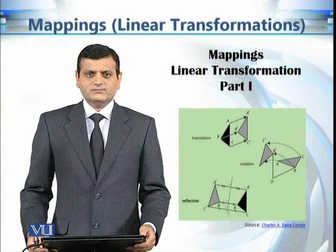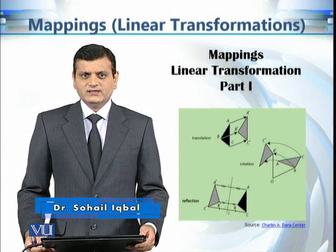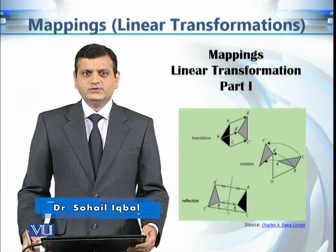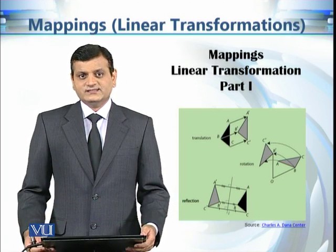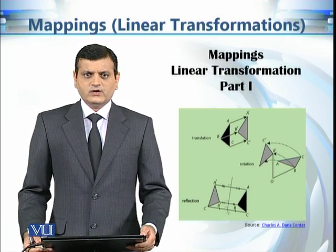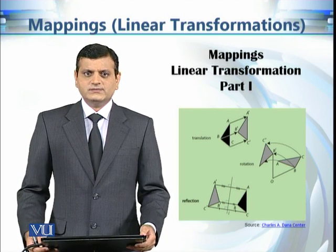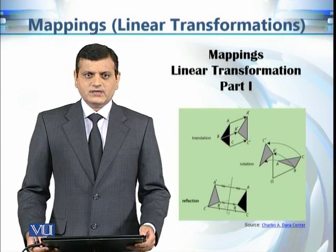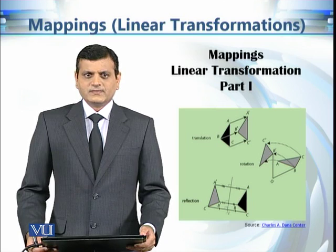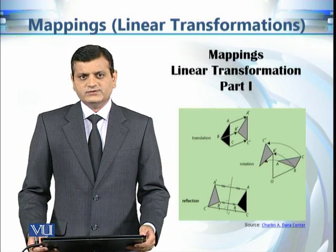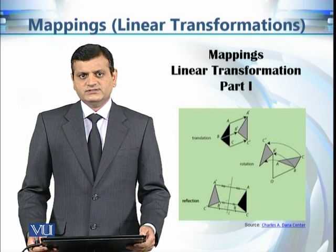So far we have discussed what are complex-valued functions and what are the mappings associated to them. Mapping is a geometrical way of visualizing a given complex-valued function, and it helps us in understanding the behavior of the function. From now on we are going to choose some particular examples of complex-valued functions and discuss the mappings associated to them. Our first example is going to be linear transformations — some very simple but important elementary complex-valued functions with very interesting geometrical interpretations.